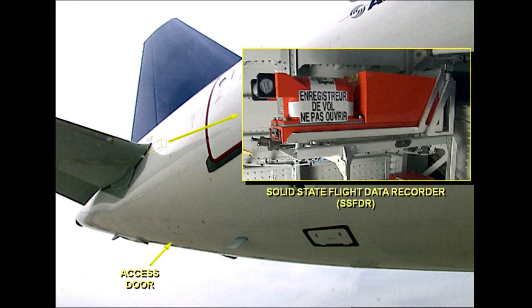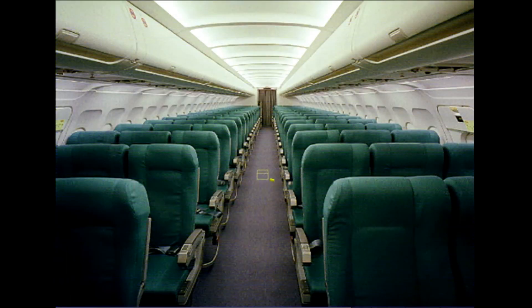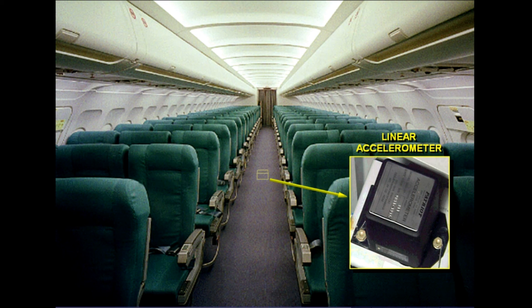The SSFDR is located just above the cockpit voice recorder, CVR, in the unpressurized area of the rear fuselage. The SSFDR stores in a solid state memory, located in a crash and fire protected housing, the data of the last 25 hours collected by the FDIU. The linear accelerometer is located close to the aircraft centre of gravity, and sends the accelerations according to the three axes — pitch, roll, and yaw — to the DFDRS.